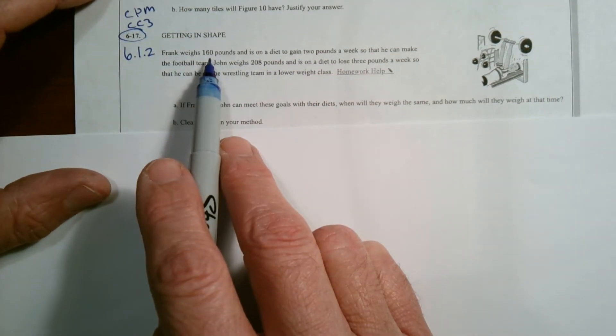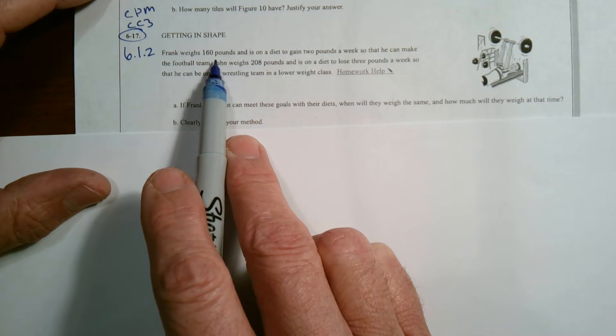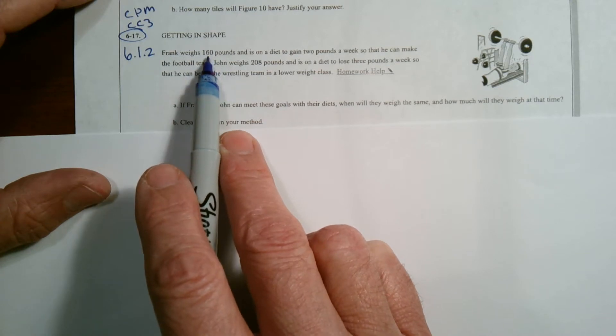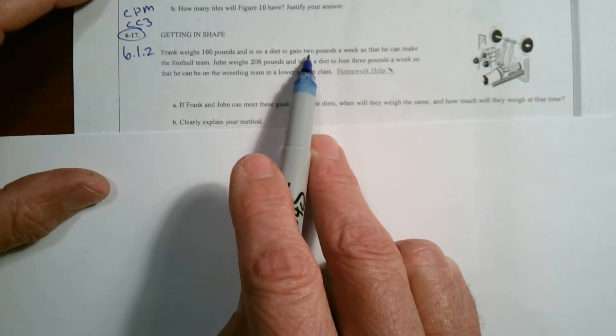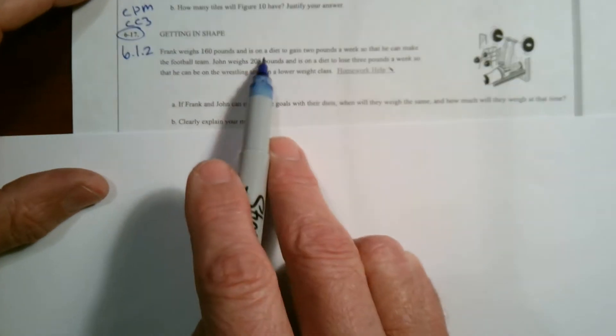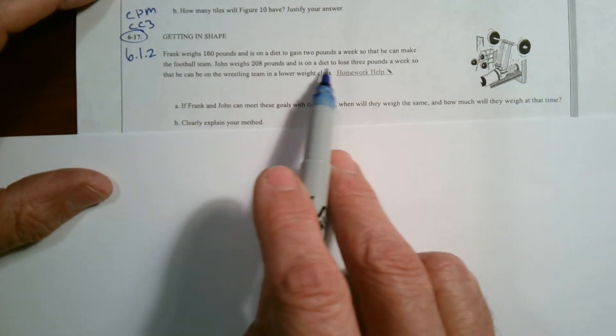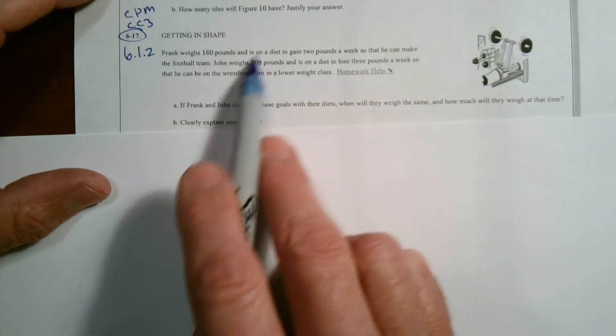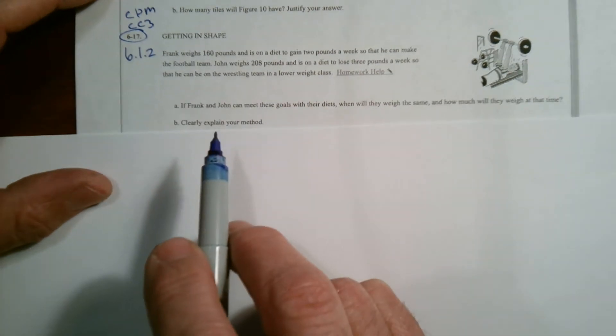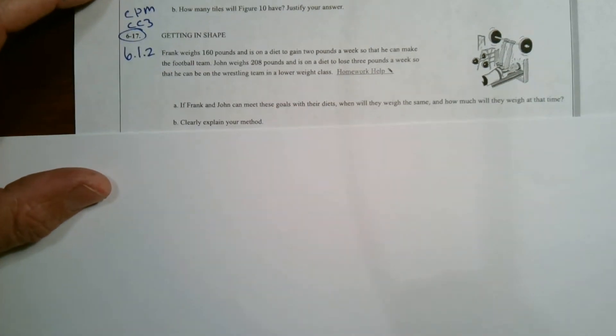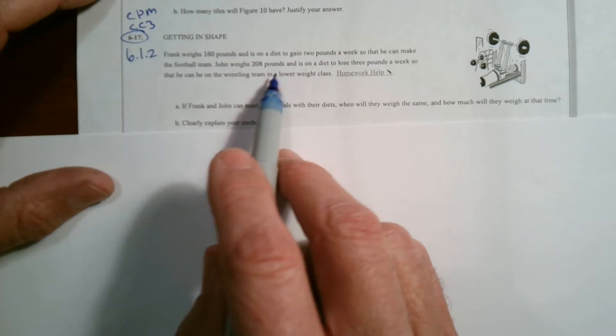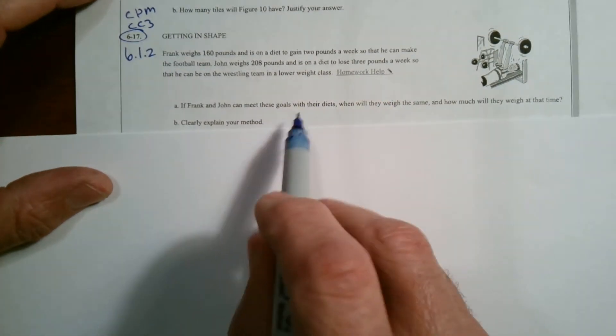So we have two situations. One starts at 160 pounds. So Frank starts at 160 pounds and is gaining two pounds per week. John starts at 208 pounds and is losing three pounds a week. So we can define some variables and create a couple of equations and then find out where those two situations would be equal, right? When they meet.